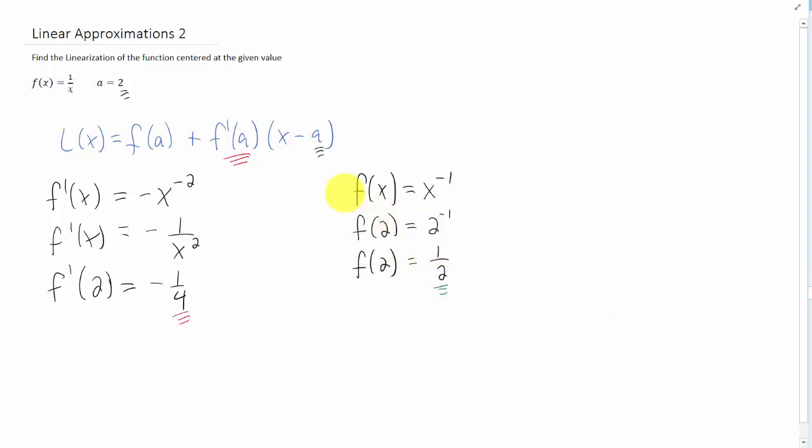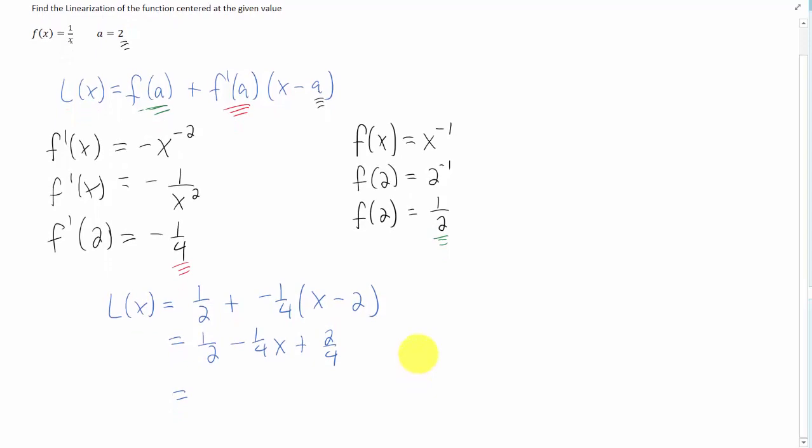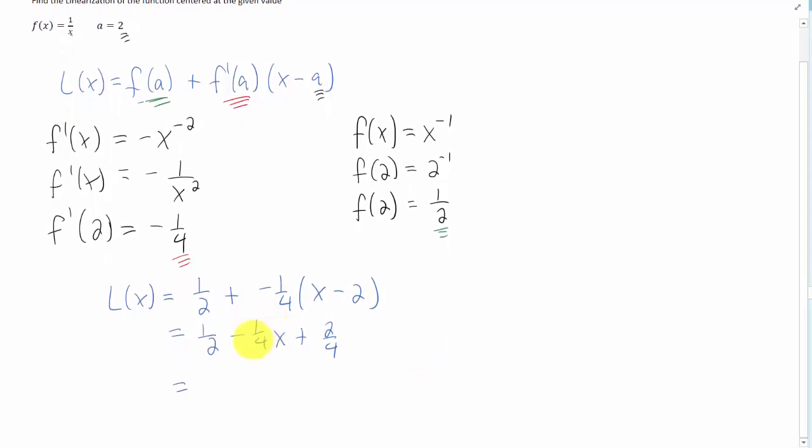We're going to plug that one half in right here, and we're going to get ourselves a final answer. I plugged everything in. Now we can distribute this negative 1 fourth through the parentheses, which gives us this line right here. A 1 half plus another 2 fourth is just another 1 half. It just gives us 1. And we have the equation of a line negative 1 fourth x plus 1. That is our final answer.